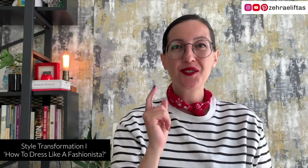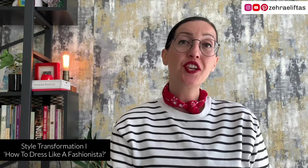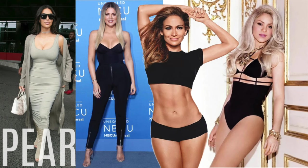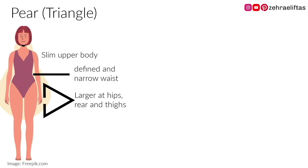Great! So you know your measurements. Generally speaking, there are five body shapes. One: pear body shape — like the Kardashians, Rihanna, Kristen Davis, Jennifer Lopez, and Shakira. Alternatively defined as the triangle. Pear body shape has a slimmer upper body relative to a larger lower body. The hips, rear, and thighs are larger than the upper body, and they have a defined and narrow waist.